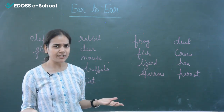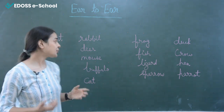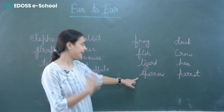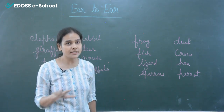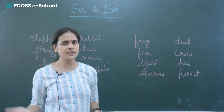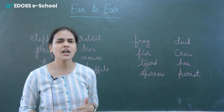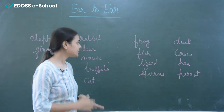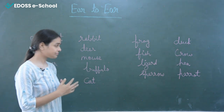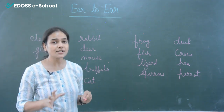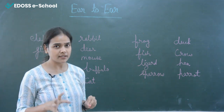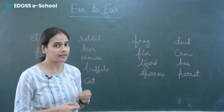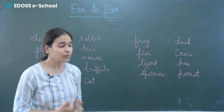What we can conclude is that these animals also have ears, but we cannot see them from the outside as they are very small. There are some birds also whose ears are covered with feathers and we cannot see the ears of those birds.